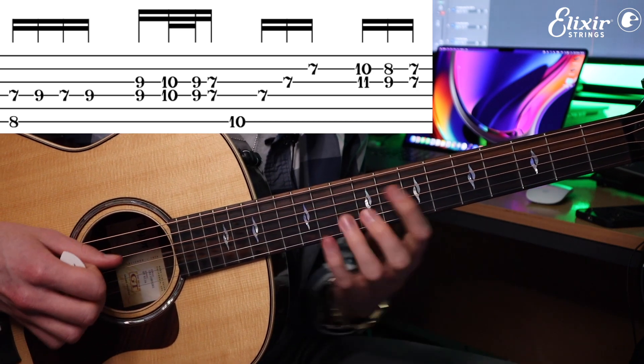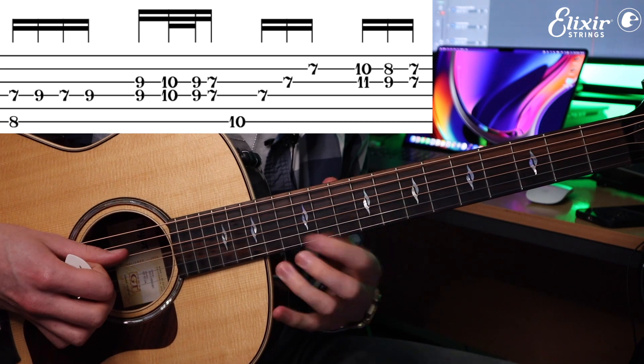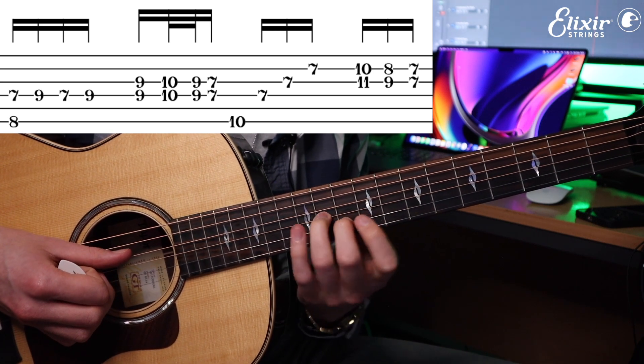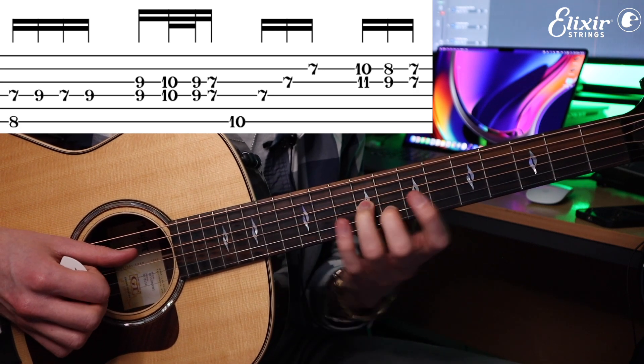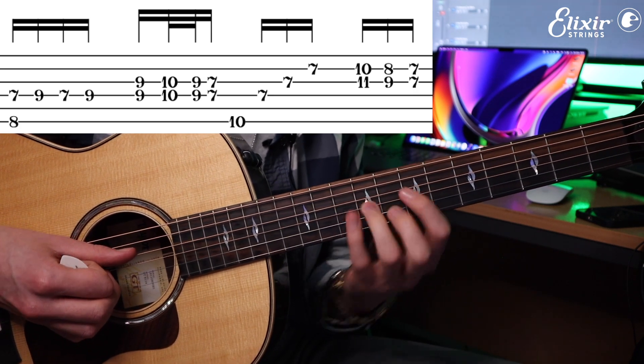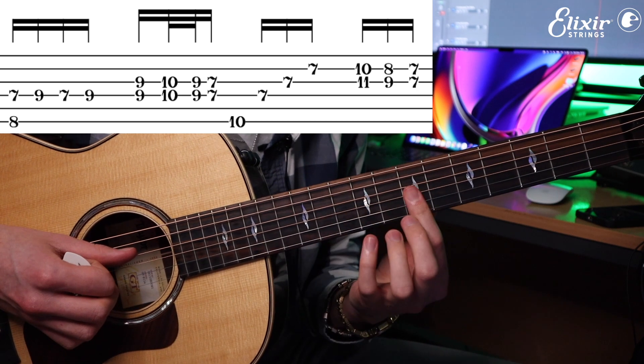Again with a backbeat after it, and then we have a double stop slide. So that's going to be third finger on the eleventh of the G, second finger on the tenth fret of the B, slid down two frets to the ninth and eighth, pulled off to the seventh fret of the G and B.